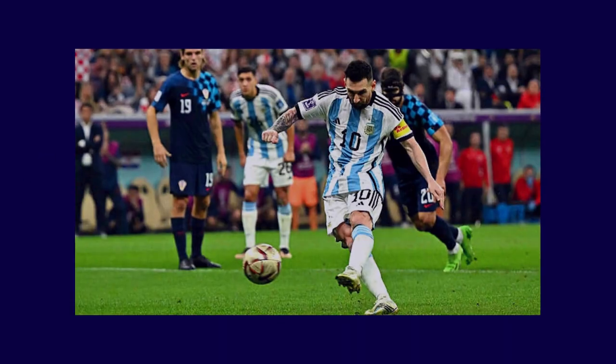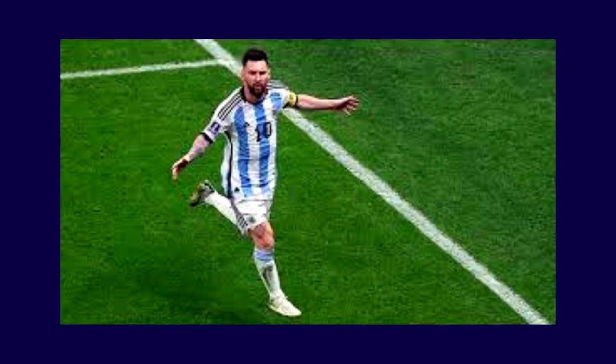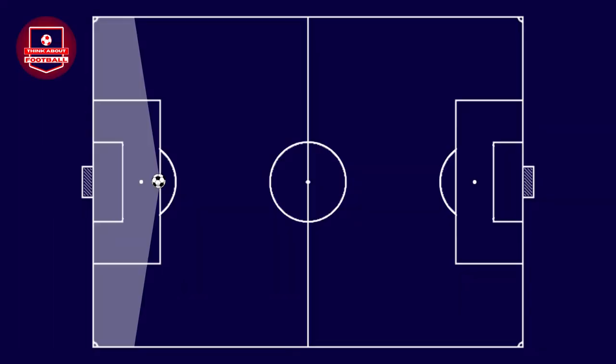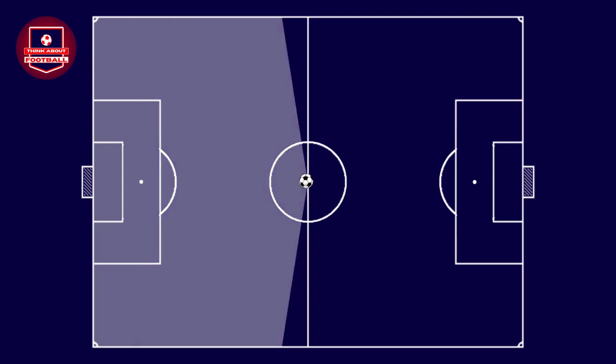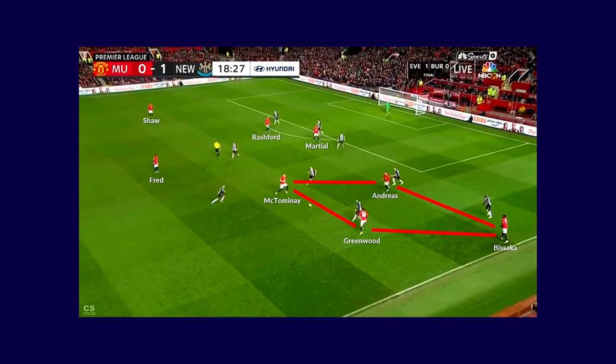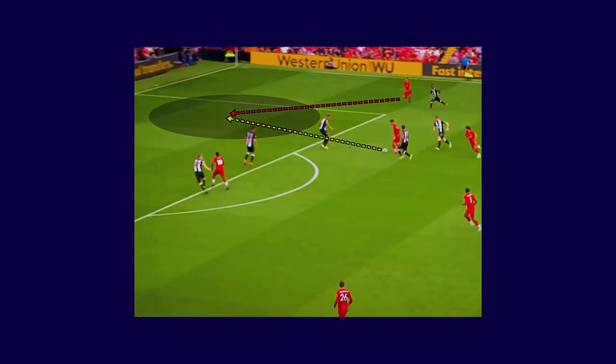Creating space in football. The primary objective of an attacking team is to create a scoring opportunity and score a goal. But to create a scoring opportunity, it's essential to get close enough to the goal. This can be achieved through collective tactical maneuvers, passing combinations, individual plays, and more.